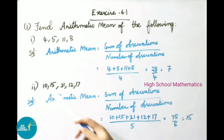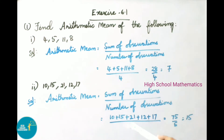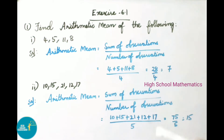Question 1(ii): Find the arithmetic mean of 10, 15, 21, 12, 17. Arithmetic mean = sum of observations / number of observations = (10 + 15 + 21 + 12 + 17) / 5 = 75 / 5 = 15.